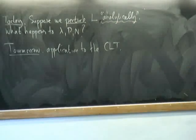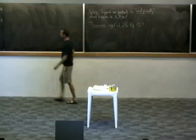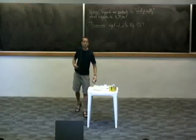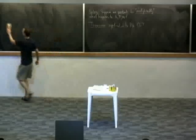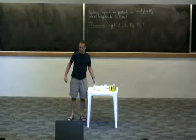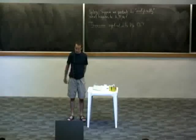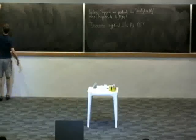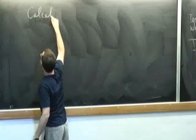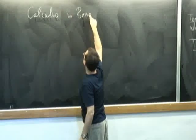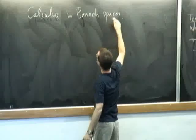With your permission, I would like to start with that. Let's start with just making sense of complex variable theory in the context of objects taking values in the space of bounded linear operators. So I would like to start by a brief review of calculus in Banach spaces.